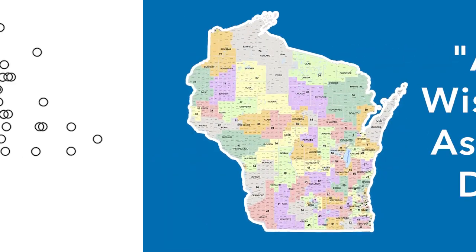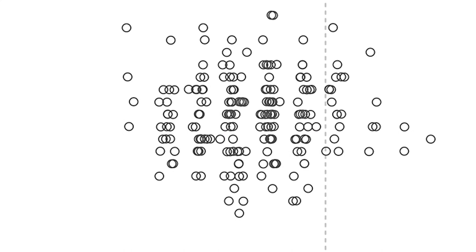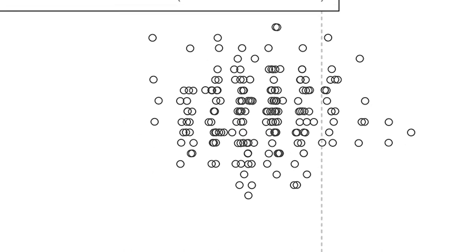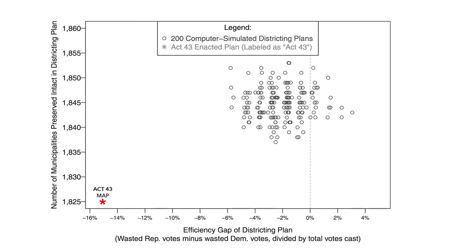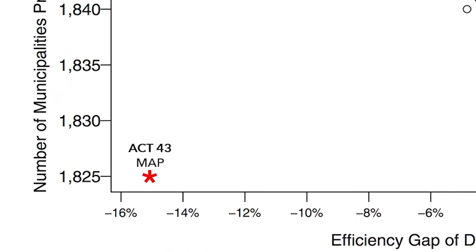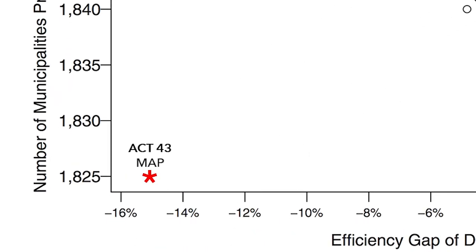It allows you to compare maps across the country going back decades into history and figure out where a given map really ranks in terms of how bad it is. A professor ran the efficiency gap on 200 randomly generated maps and compared it with the map we're challenging in court. All the random maps are way over here in terms of their degree of bias, much closer to partisan fairness or symmetry — and Act 43 is way over here. So the geography of where people live is not driving the gerrymandering.